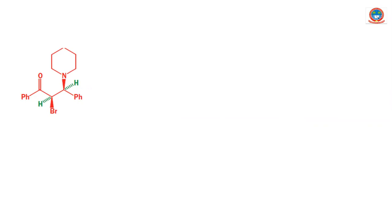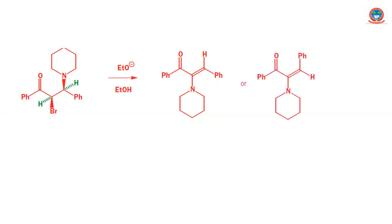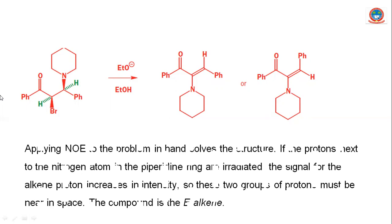Consider this example: a molecule undergoing an elimination reaction with rearrangement. There are two possible products formed. Which is the major product or which one will form after rearrangement? We cannot use coupling constant here because there is only one proton — there is no neighboring proton. So in such molecules, the NOE experiment is very helpful. Let us apply NOE to this problem.